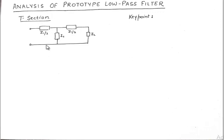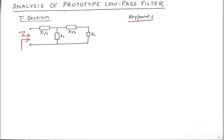For a low-pass filter of T section, we'll talk about the T section first. We have a T type low-pass filter, and we want to find its characteristic impedance. To do so, we simply need to remember one key point that will make things very easy: filters are symmetric devices.